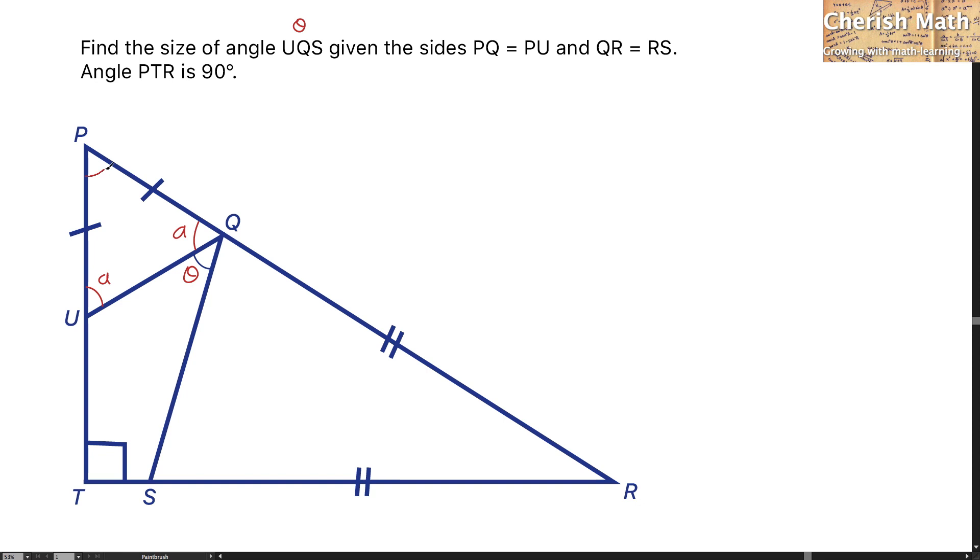Now I'm going to find the value of this angle by using supplementary angles that will be 180 degrees minus A minus A, and it turns 180 degrees minus 2A.